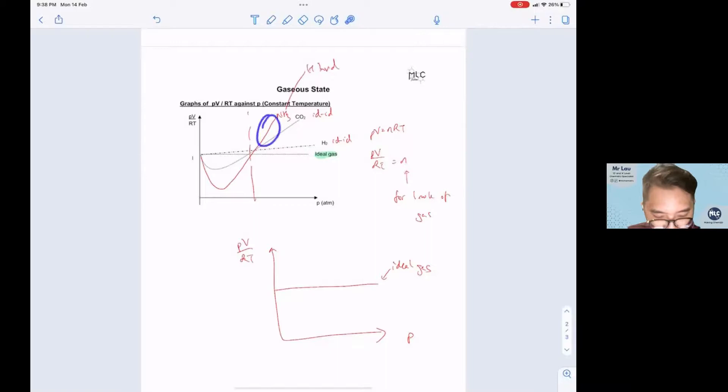So this side, whether it intersects or whether it deviates this way, it doesn't really matter. We are only concerned with the deviation over here, the negative deviation over here.